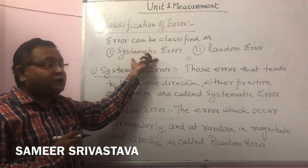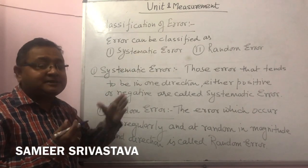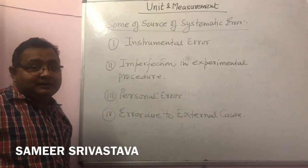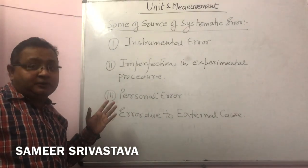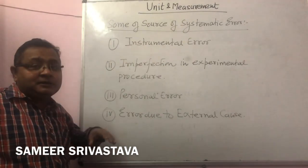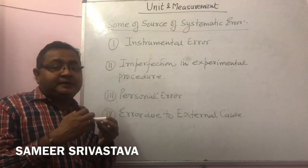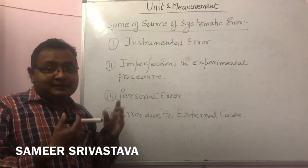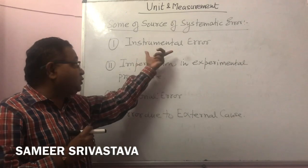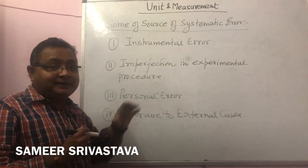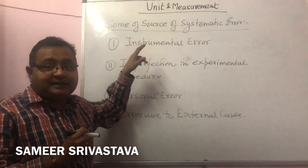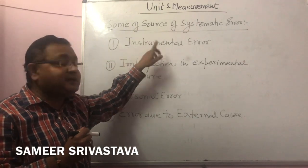What are the causes for systematic error? There are four or five sources. The first is instrumental error — it means there is some error present in the instrument during the time of design of that instrument, or error introduced by the manufacturer. That is called instrumental error: error during the design or manufacturing of the instrument due to some lack of design.